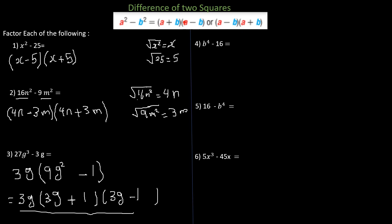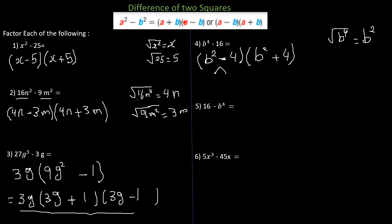In example four we have b to the power of 4 minus 16. The positive square root of b to the power of 4 is b squared, and the square root of 16 is 4, so we get b squared minus 4 times b squared plus 4. But b squared minus 4 is still a difference of two squares: the square root of b squared is b and the square root of 4 is 2, giving b minus 2 times b plus 2. Note there is no such thing as a sum of two squares for factoring, so b squared plus 4 remains as is.